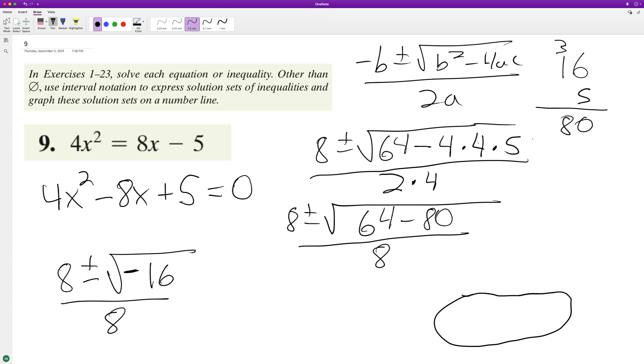And we can pull out—so we can pull out an 8 plus or minus 4 square root of negative 1, all over 8. And this can be reduced down to 2 plus or minus...